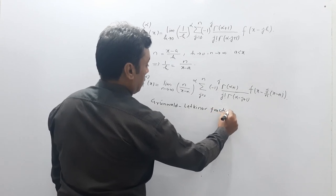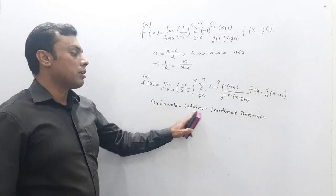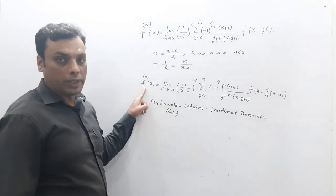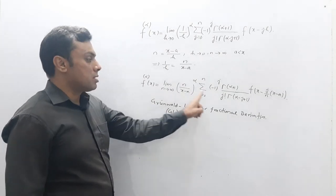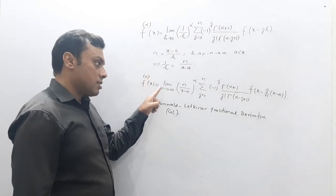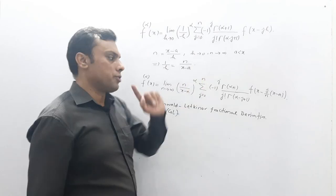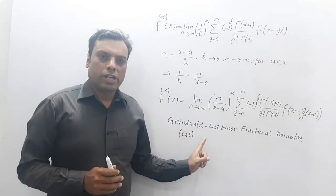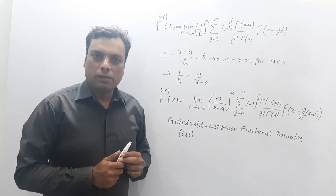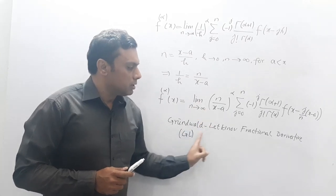This final result is known as the Grünwald-Letnikov fractional derivative, or simply GL. However, this definition is quite complicated — it involves a limit, which means it only makes sense if that limit exists, and evaluating it for every function is not easy. In the next lecture we will derive one more useful definition of fractional calculus, known as the Riemann-Liouville fractional integral, and see how to construct it from this limit form.